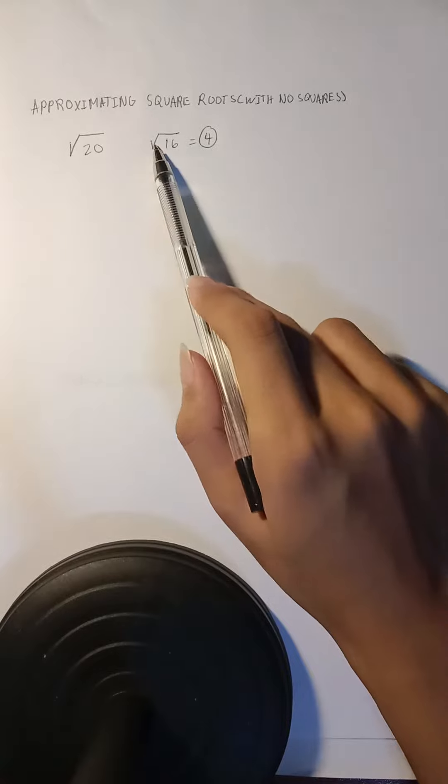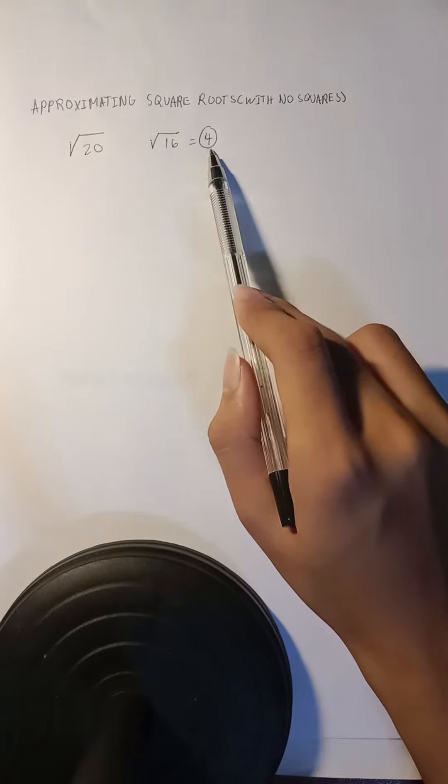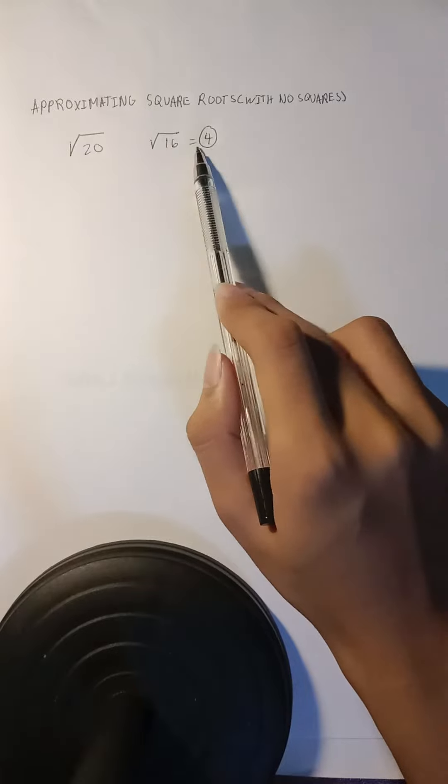The nearest square root of 20 that has a perfect square is square root of 16, which is equivalent to 4. Using this number here, number 4, we could simply put it down there.